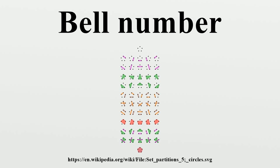The Nth Bell number BN counts the number of different ways to partition a set that has exactly N elements, or equivalently, the number of equivalence relations on it. Outside of mathematics, the same number also counts the number of different rhyme schemes for N-line poems, as well as appearing in counting problems. BN is the Nth moment of a Poisson distribution with mean 1.